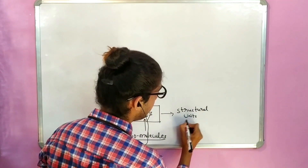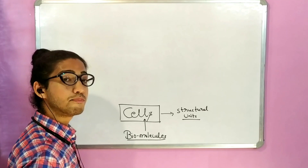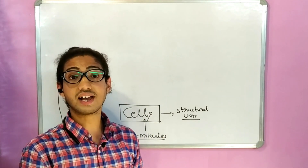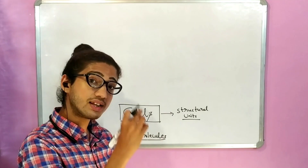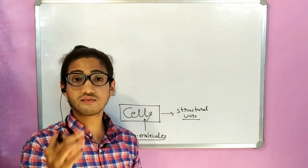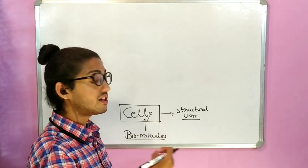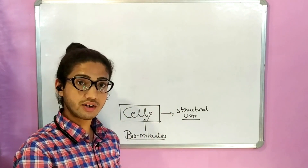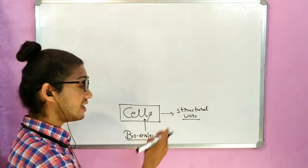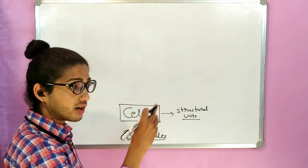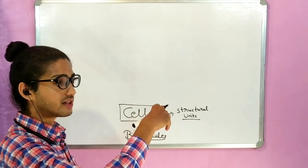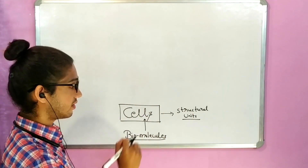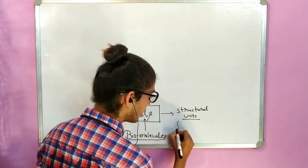A cell is also the functional unit because it comprises different cell organelles — it's like a factory. There are different workers working inside the cell. The components of the cell, for example the plasma membrane and different cytoplasmic organelles like Golgi body, endoplasmic reticulum, and ribosomes, all work like units inside a factory, making the entire factory functional. That's why we also call it the functional unit of life.